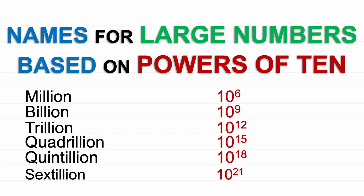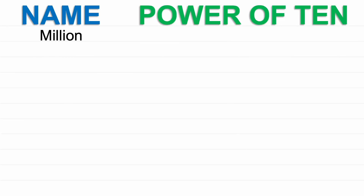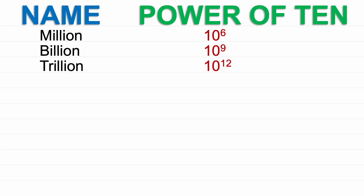Names for large numbers based on powers of ten. Million: 10 to the power of 6. Billion: 10 to the power of 9. Trillion: 10 to the power of 12.